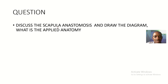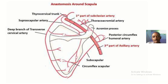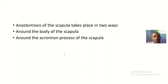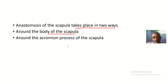So let's move to the scapula anastomosis and draw the diagram. This is the scapula anastomosis, and you can see one anastomosis up here and another anastomosis down here. The anastomosis of the scapula takes place in two ways: we have anastomosis around the body of the scapula, and we have anastomosis around the acromion process of the scapula.